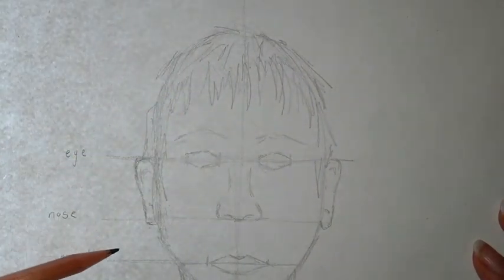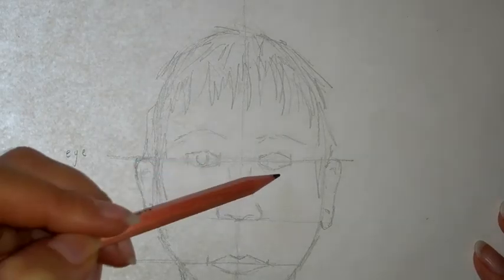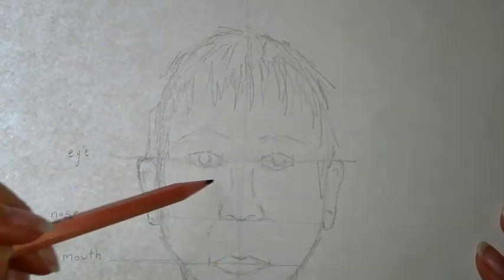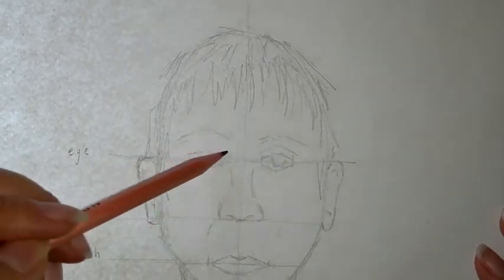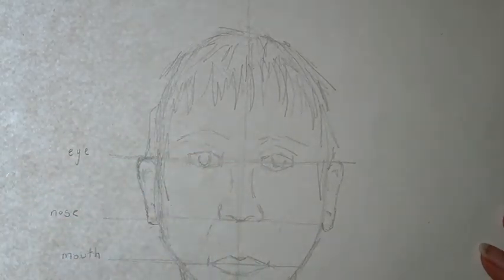Once you've got your guidelines in and you're quite happy with the actual proportions of the face, you can then finally start to add details in to actually finish your portrait off. And then finally will be to add tone. So look at where you've got your shadow.